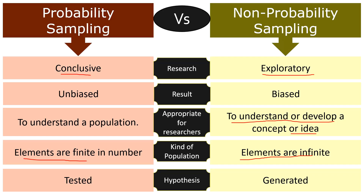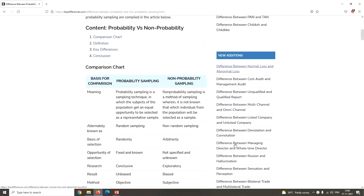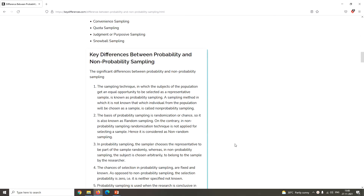While probability sampling tests a hypothesis, non-probability sampling generates it. This brings me to the end of this lesson. I hope the concepts are clear now. However, if you want to study the topic further in detail, you can visit our official website at keydifferences.com, where you can find a detailed comparison of probability sampling and non-probability sampling along with their definitions.